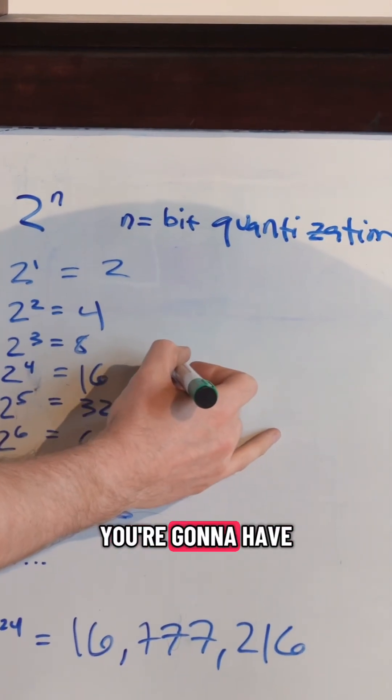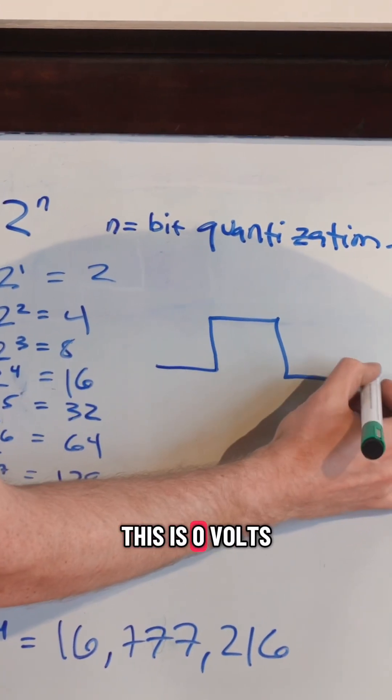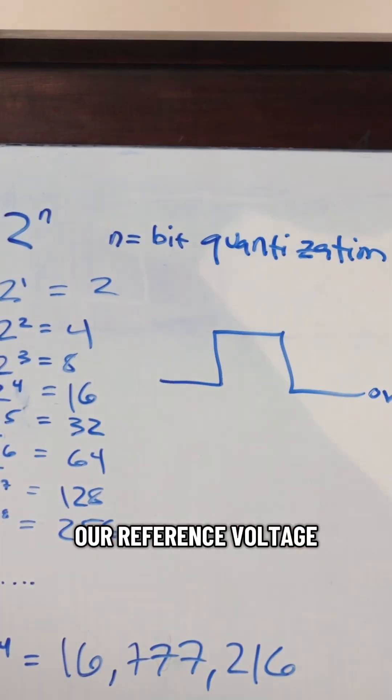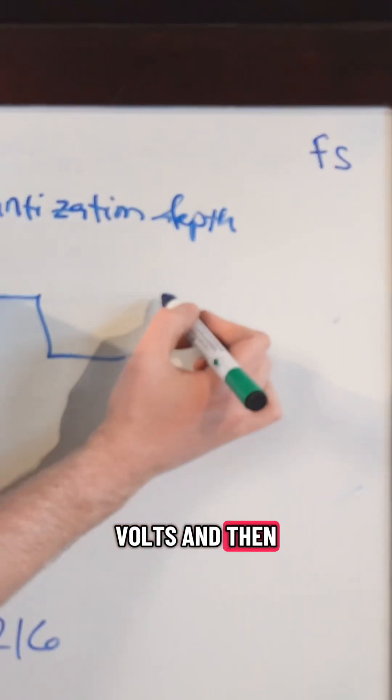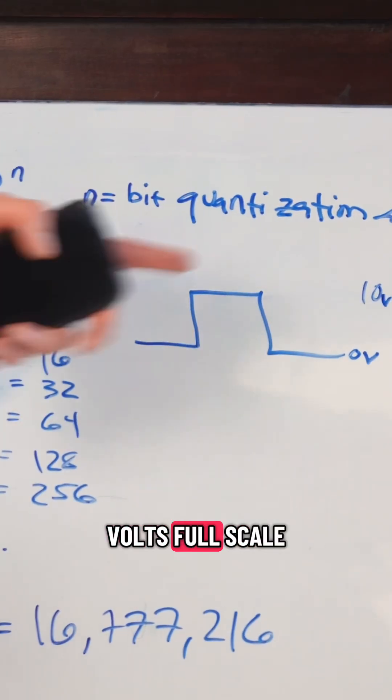You're going to have this is zero volts. And let's say our reference voltage is, let's say, 10 volts. And then this is 10 volts, full scale.